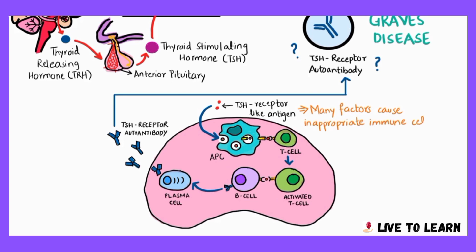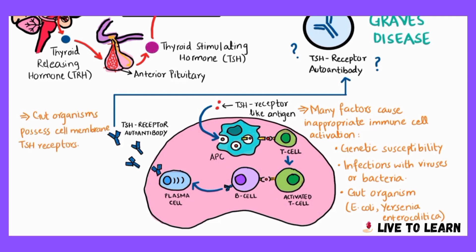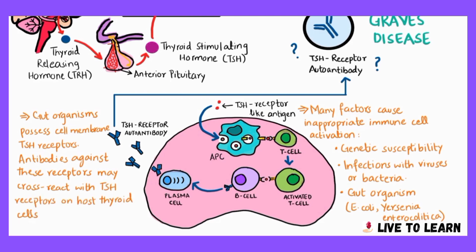The next question is what causes the immune cells to become abnormally or inappropriately activated against the thyroid gland. The exact cause is unknown, as in other autoimmune diseases. However, many factors can lead to this inappropriate immune cell activation, such as genetic susceptibility, infections with viruses or bacteria, or infections with certain gut organisms such as E. coli or Yersinia enterocolitica. These organisms possess cell membrane TSH receptors, and antibodies against these receptors may cross-react with the TSH receptors on the host thyroid cells. This raises the possibility that the initiating event in the pathogenesis may be an infection with possible molecular mimicry in a genetically susceptible individual.